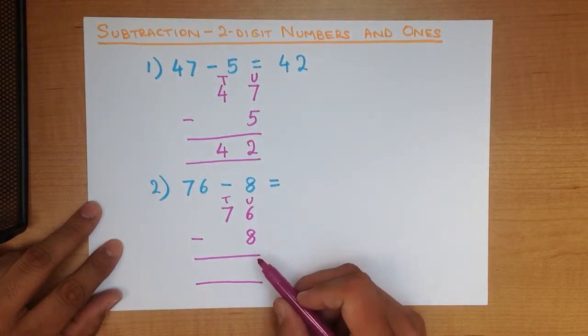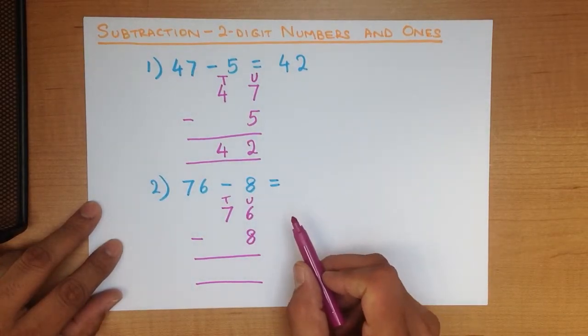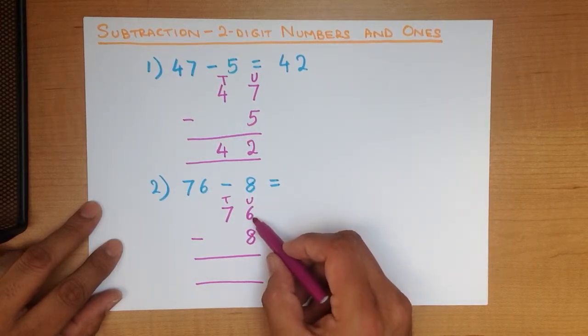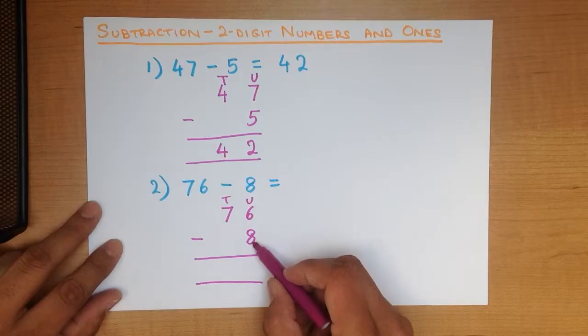So let's do this. And we start with the column on the right-hand side first. What is 6 minus 8? 6 minus 8.